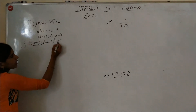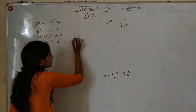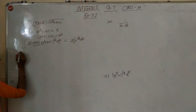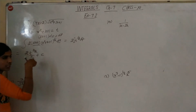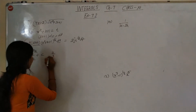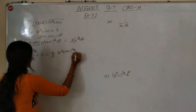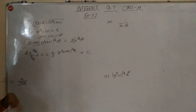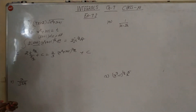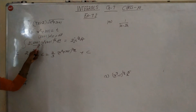Applying the integration formula, we get t to the power 1 by 2, which gives us the answer: 2 by 3 times (x squared plus x plus 1) to the power 3 by 2, plus C.